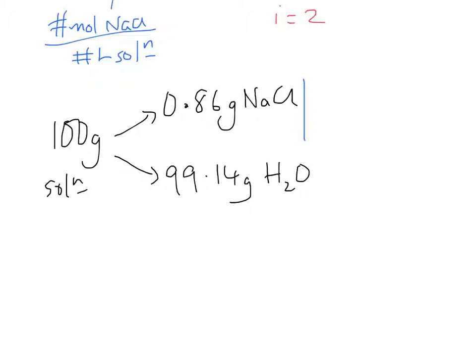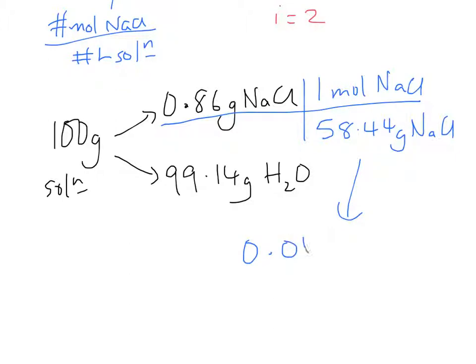We want the molar concentration. So it stands to reason we're going to want to convert grams to moles. We can go ahead and add up the weights of sodium and chlorine to get the molar mass. And that gives us 58.44. And so we can go ahead and convert grams to moles. And if you do that, you should get 0.01472 with a guard digit moles of sodium chloride.